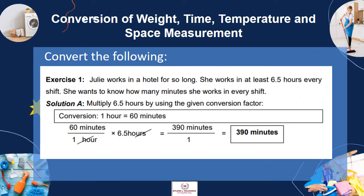Exercise 1: Julie works in a hotel and works at least 6.5 hours every shift. She wants to know how many minutes she works in every shift. Solution: Multiply 6.5 hours using the conversion factor, 1 hour is equal to 60 minutes. (60 minutes / 1 hour) × 6.5 hours = 390 minutes.